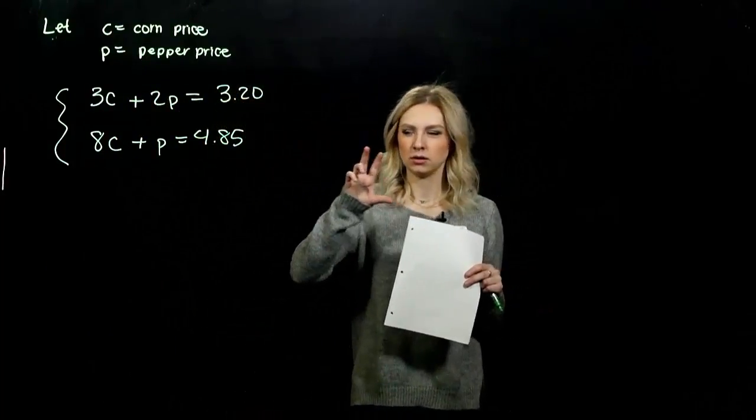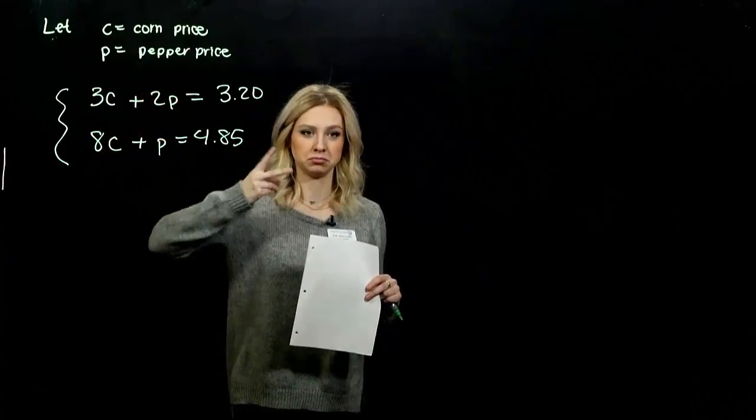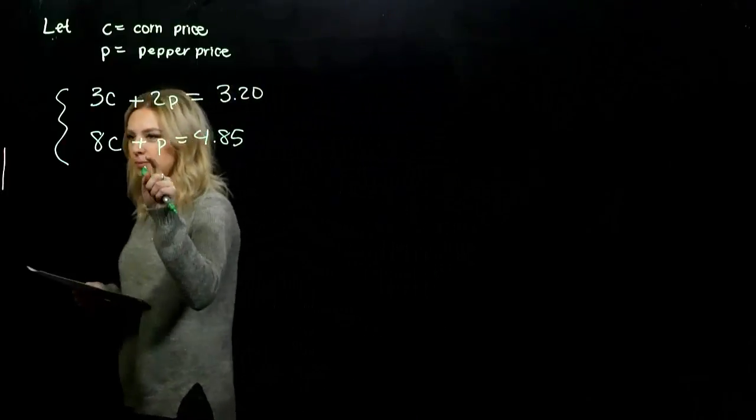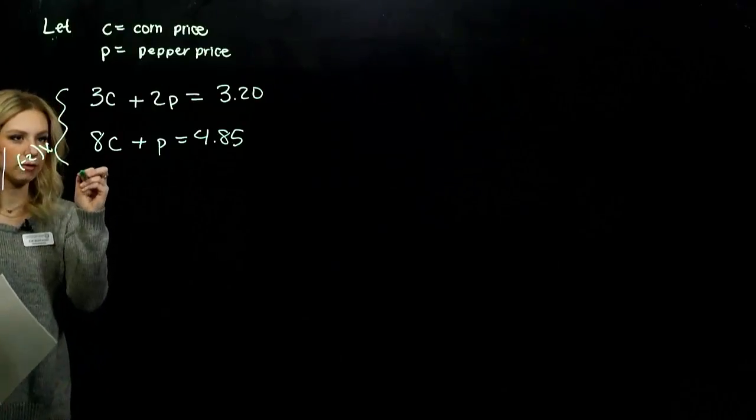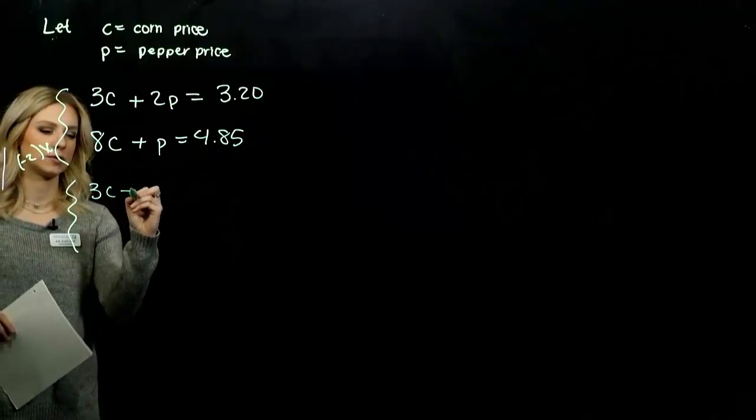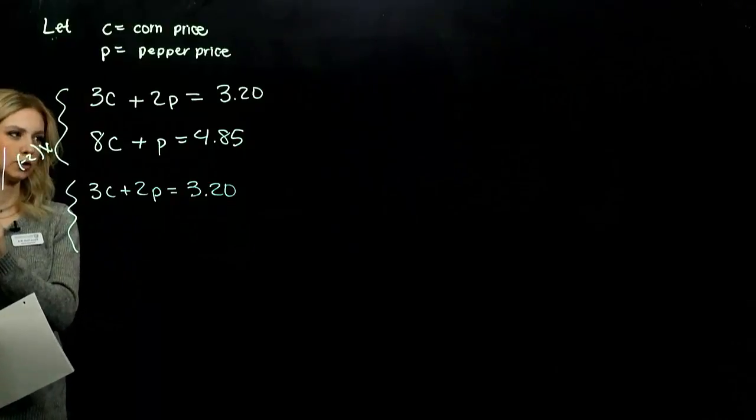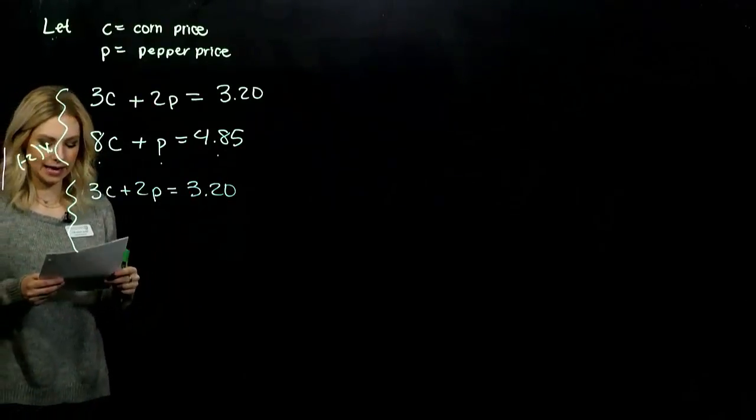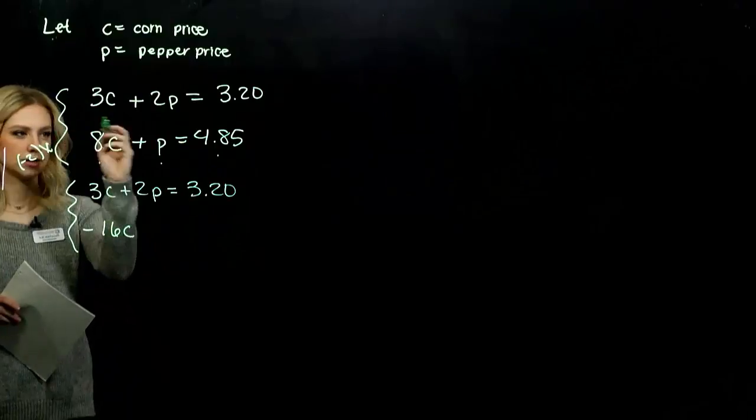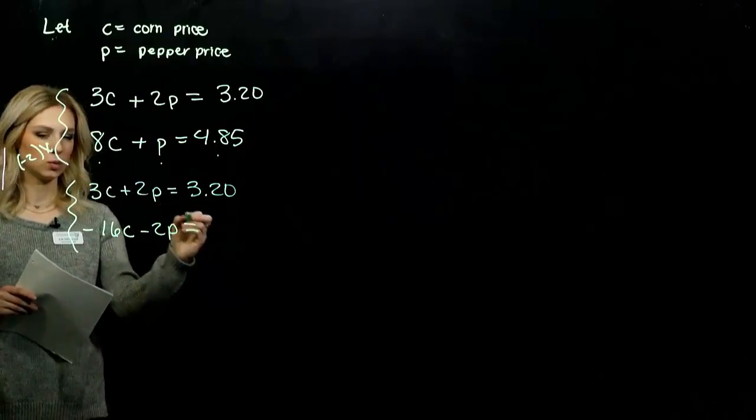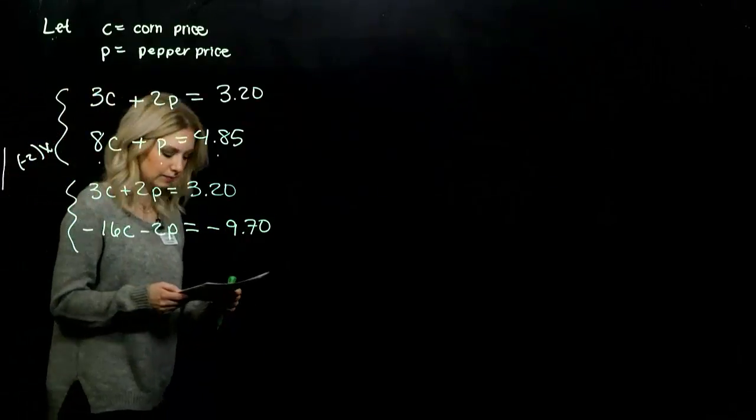What is going to be the easiest variable to eliminate, C or P? LCD between these two is bigger. LCD between these two is two. So we just have to alter the bottom equation by a factor of negative two. The first equation stays the same: 3C + 2P = 3.20. And now every single term down here we need to multiply by negative two. So we're looking at -16C - 2P = -9.70.